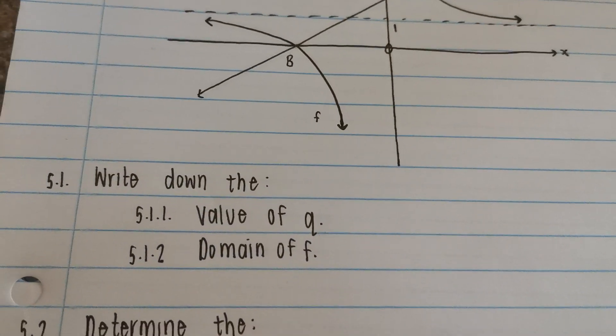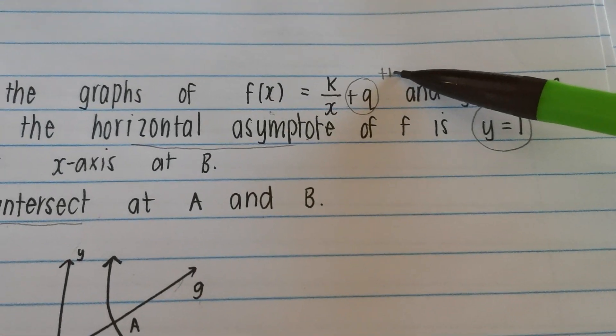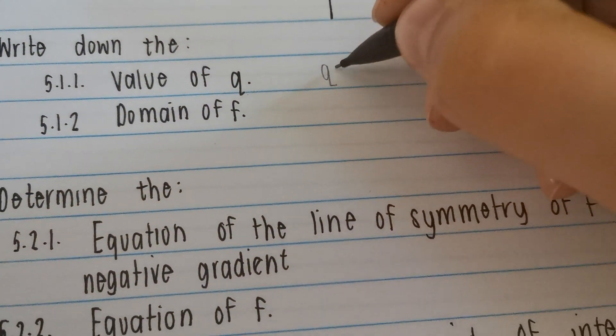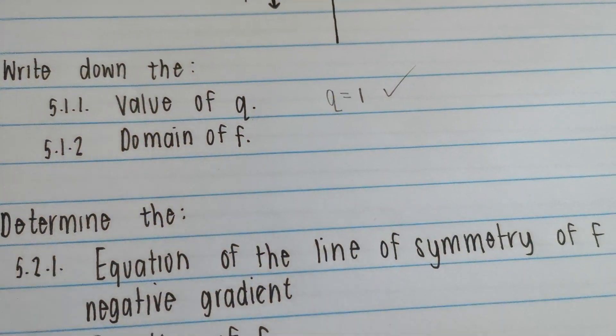Let's answer the questions. The first question says, write down the value of q. Hey, we did that already. There it is. So we're going to write this down. We're going to say q is equal to 1. Easy peasy marks. Got that correct.